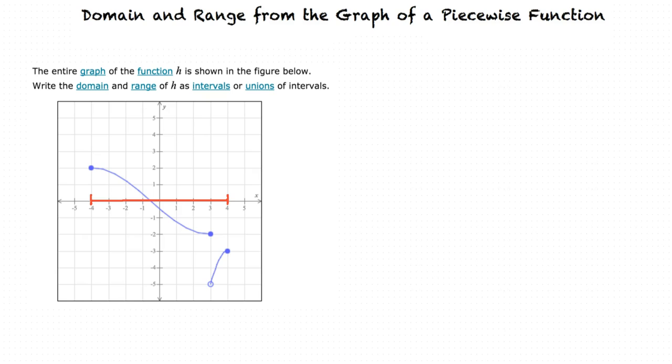But it looks like there's a gap at x equals 3. It does look like this, but even though there's a gap across the y-axis, there is no gap along the x-axis, which is all we need to focus on with the domain. So our domain is the interval from negative 4 to 4.